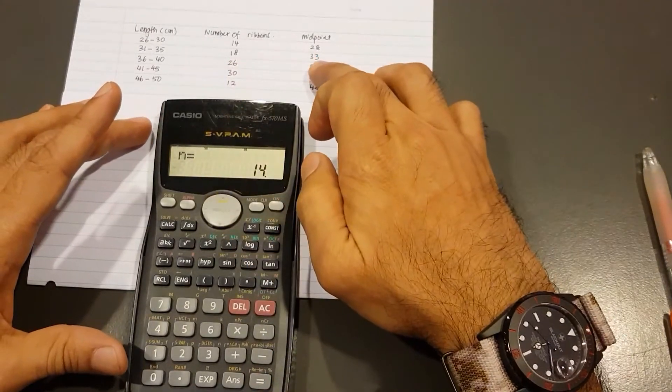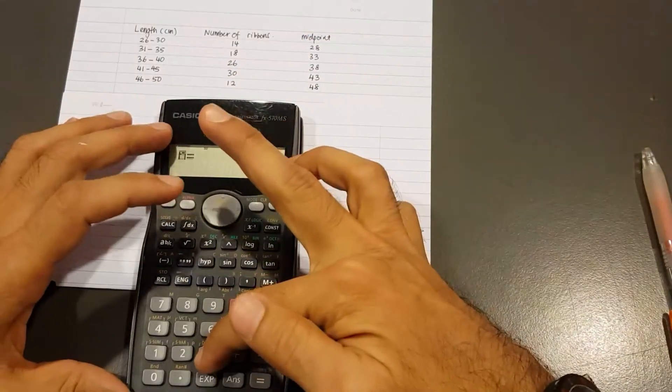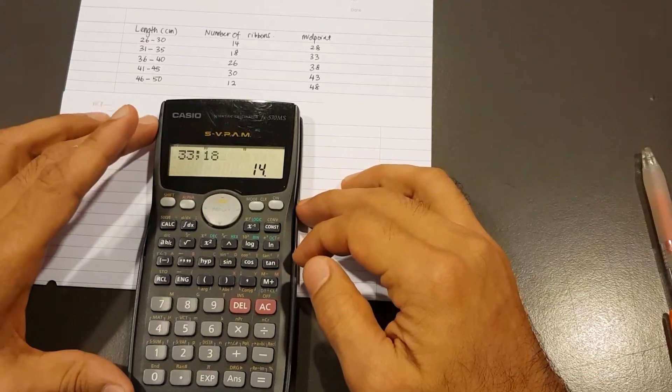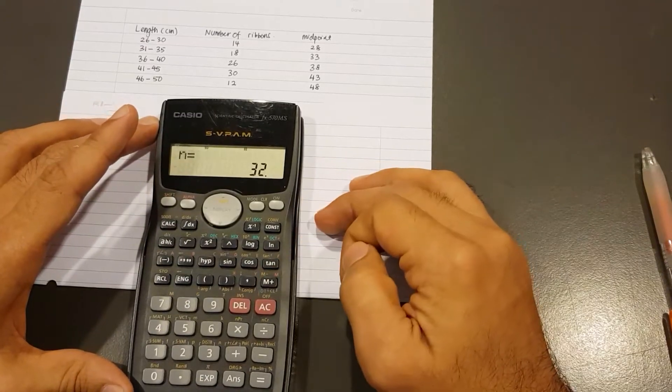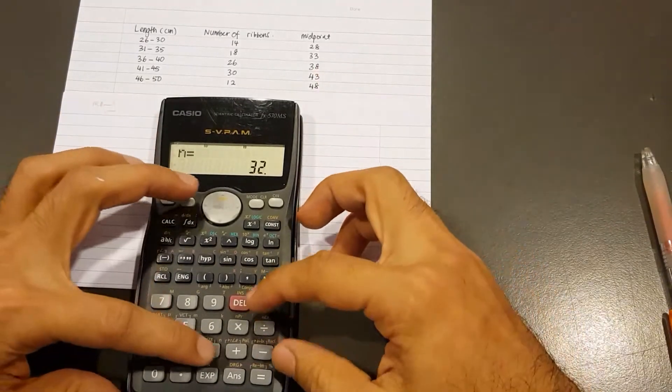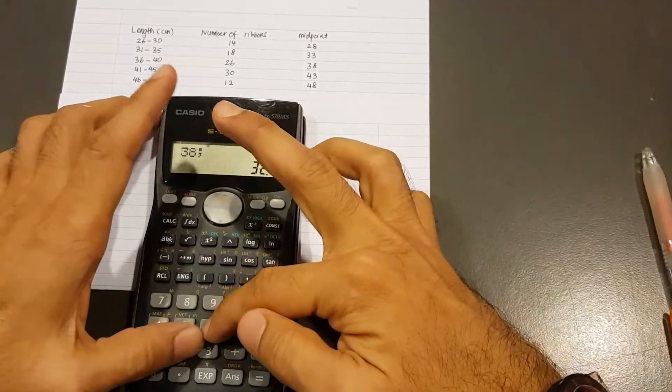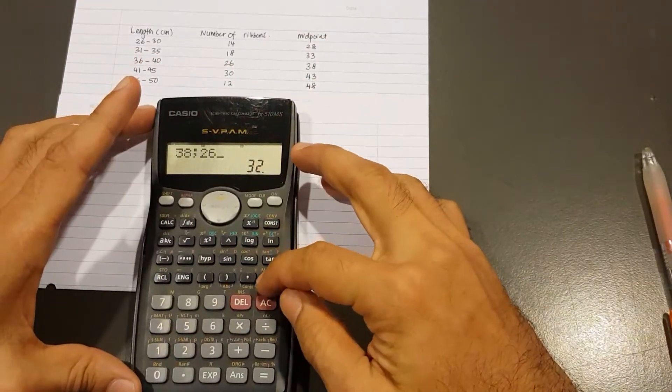Now the second row is 33 and 18. So 33, shift, comma, and then 18. Once again, M plus. The next one is 38, shift, comma, followed by 26. Then don't forget M plus.